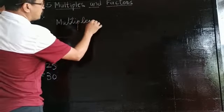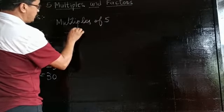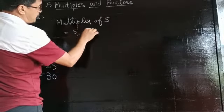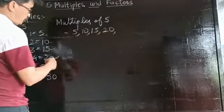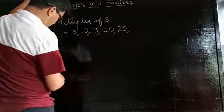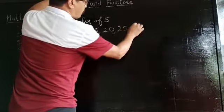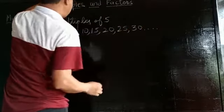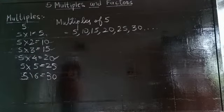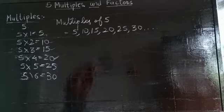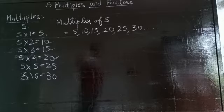The multiples of 5 are 5, 10, 15, 20, 25, 30, and so on. This is how we find the multiples of a number. The answers you get after multiplying the number 5 by 1, 2, 3, 4, and so on - those answers are the multiples of 5. In the same way, you found the multiples of 2.